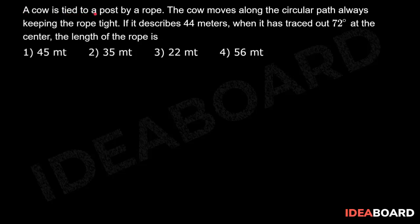A cow is tied to a post by a rope. The cow moves along the circular path, always keeping the rope tight. If it described 44 meters when it has traced out 72 degrees at the center, then the length of the rope is.